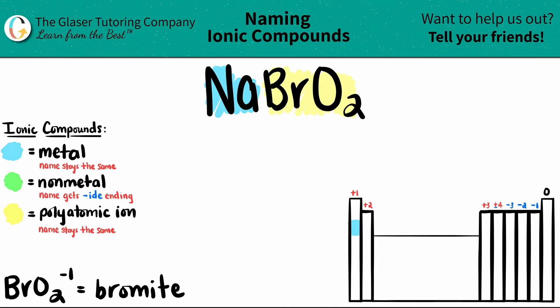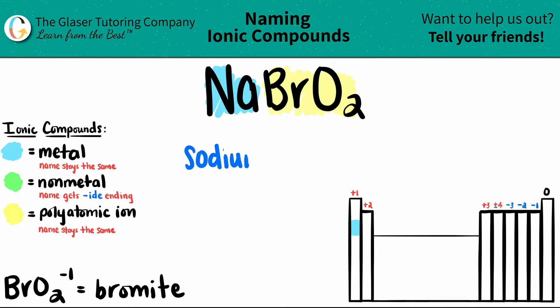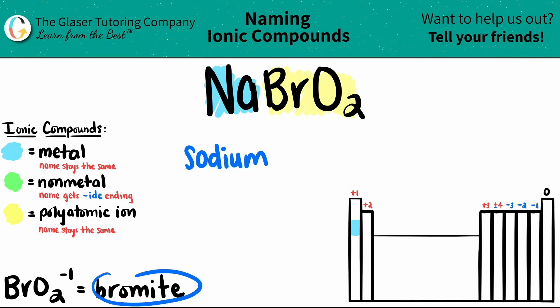The metal's name always stays the same. Na is sodium — sorry guys, I got distracted because I just read this as 'nah bro.' Anyway, Na is sodium and the name stays the same. And now comes our polyatomic, and that name stays the same too. So since the polyatomic name is bromite, I'm just going to put bromite.